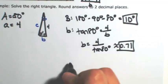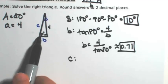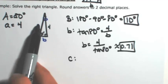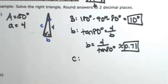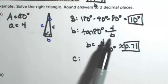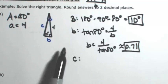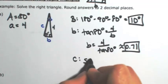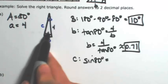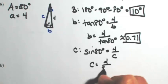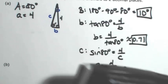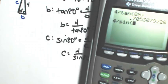All that's left is to find side c. I could use 80 degrees again with opposite over hypotenuse — that's the sine function — or I could use the Pythagorean theorem. I'm going to stick with right triangle trigonometry so I don't have to rely on an approximation. So the sine of 80 degrees equals opposite over hypotenuse, which is 4 over c. Solving for c gives 4 over sine of 80 degrees, which is approximately 4.06.